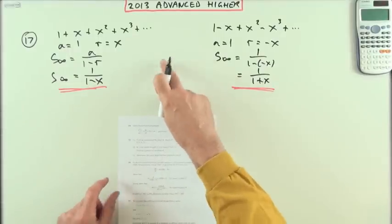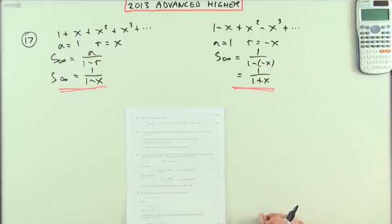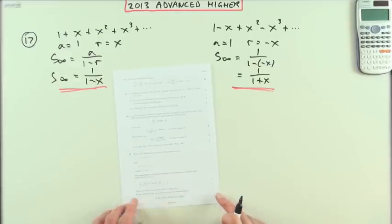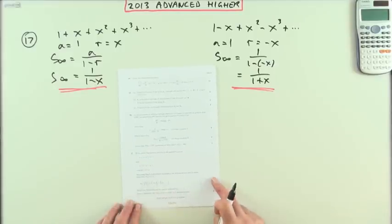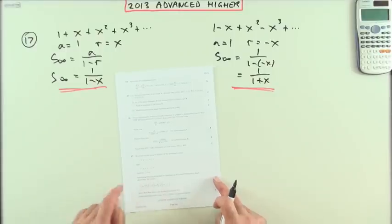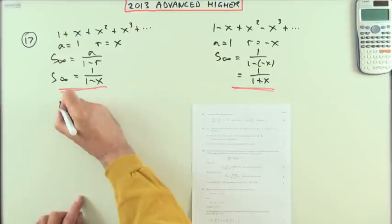The next part may look a little bit scary but it's not really. It says assuming it's permitted to integrate an infinite series term by term, show this expression.